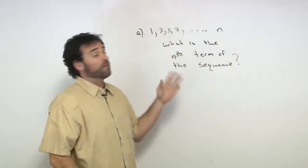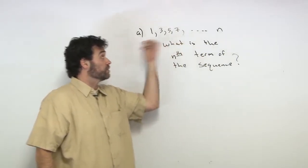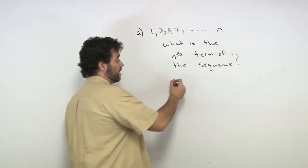The numbers are 1, 3, 5, 7. And we all know we can keep going: 9, 11, dot, dot, dot. We see the pattern. Let's write that out. Let's say what we got here.